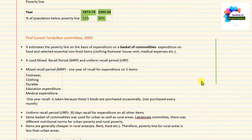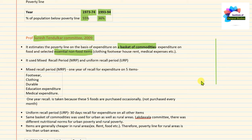The next important committee for poverty estimation is the Suresh Tendulkar Committee, 2009. It estimates the poverty line on the basis of expenditure on a basket of commodities — that is, expenditure on food and selected essential non-food items such as clothing, footwear, house rent, and medical expenses. Unlike the YK Alagh or Lakdawala committees which considered only minimum nutrition, the Tendulkar Committee went one step ahead to include essential non-food items in the poverty line.